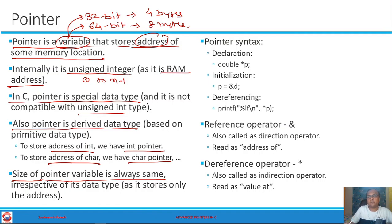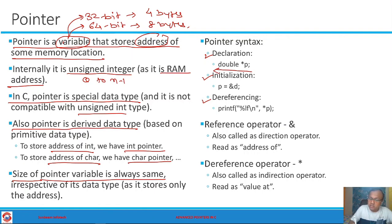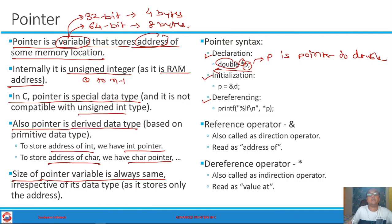Now it is time to talk about pointer syntax. There are three important things to understand: first, declaration of a pointer; second, initialization of a pointer; and third, dereferencing of a pointer. A pointer is declared as `data_type *p`. I suggest reading it from right to left: 'p is a pointer to double.' Just by this declaration, a pointer variable will be created — but it will contain some garbage address.